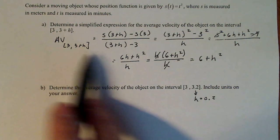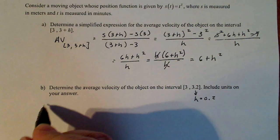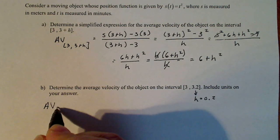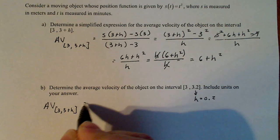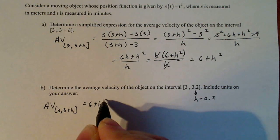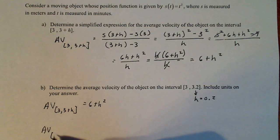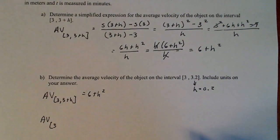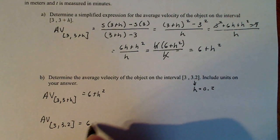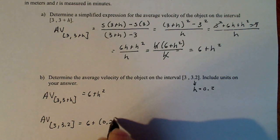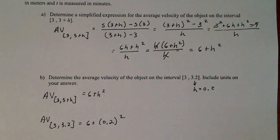So if I know my average velocity is 6 + h over [3, 3+h], that means my average velocity from 3 to 3.2 is going to be 6 + 0.2. That's the whole reason why we did this generic form, so we could use it.